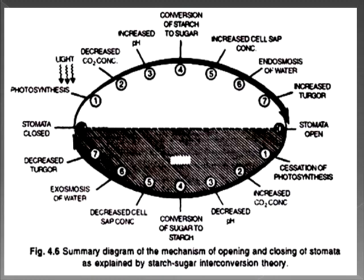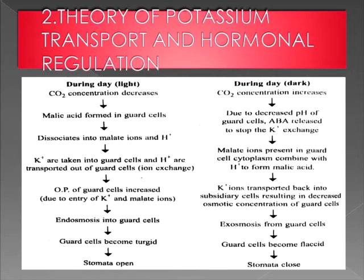Another criticism is that starch and other polysaccharides do not occur in onion plants where stomatal movement does occur. Also, glucose is not detectable in guard cells when stomatal opening occurs, and the theory could not explain the extra effectiveness of blue light at the time of stomatal opening. So, the hypothesis given by either Siree or Steward could not be concluded as a complete theory. Next comes the explanatory theory regarding the movement of stomata given by Levitt: the theory of potassium transport and hormonal regulation.